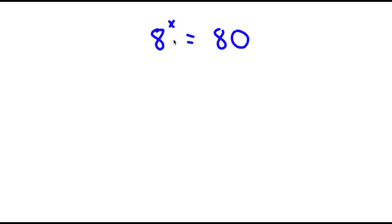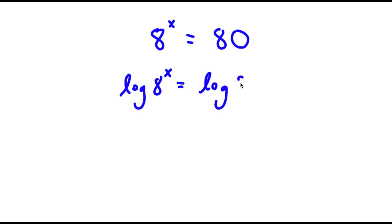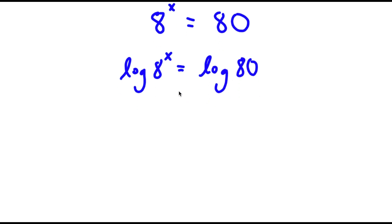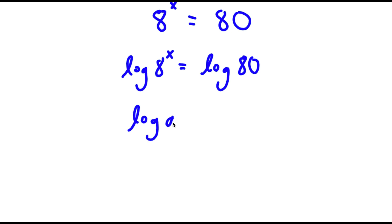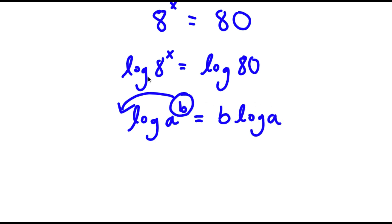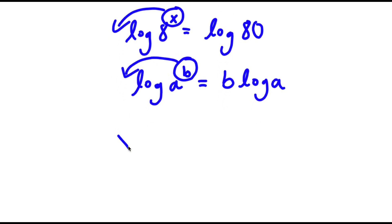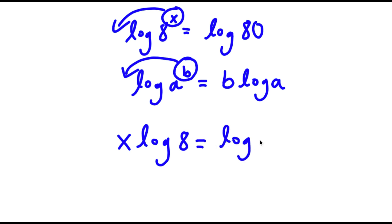In this problem, I have 8 to the power of x is equal to 80. To solve this, I'm going to take the log on both sides: log of 8 to the power of x equals log 80. If I have log a to the power of b, I can move the exponent b to the front, giving b times log a. So x times log 8 is equal to log 80.